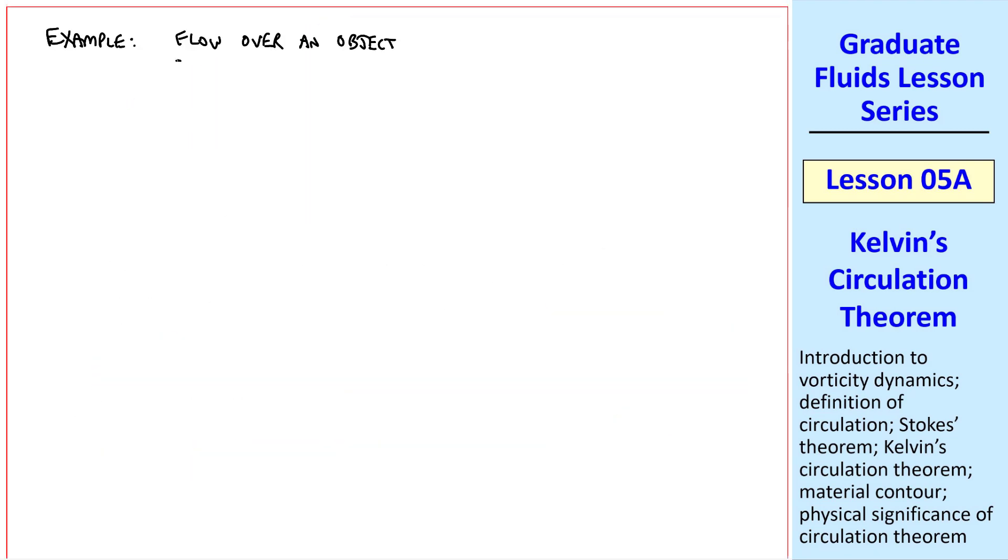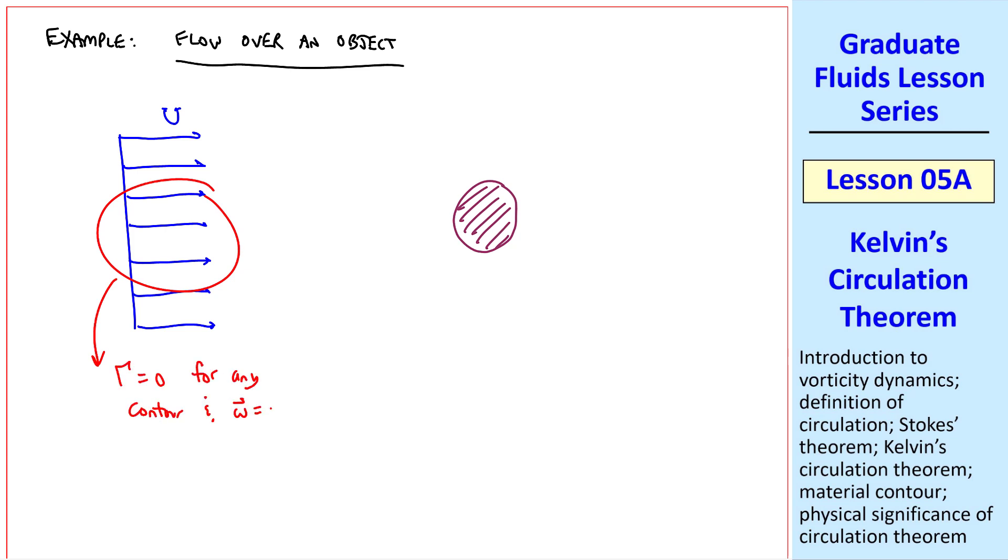Take, for example, flow over an object. We start with uniform flow from left to right, some speed capital U. And the flow encounters some object in the flow, like a cylinder perhaps. In this upstream portion of the flow, gamma equals zero for any contour. And if we shrink that contour to zero, omega equals zero for any fluid particle, since vorticity is just circulation per unit area. From our study of fluid mechanics, we know that there's a viscous region in the boundary layer. And then in a flow that separates like this, we have a viscous wake as well. But everywhere else, the flow is approximately irrotational.